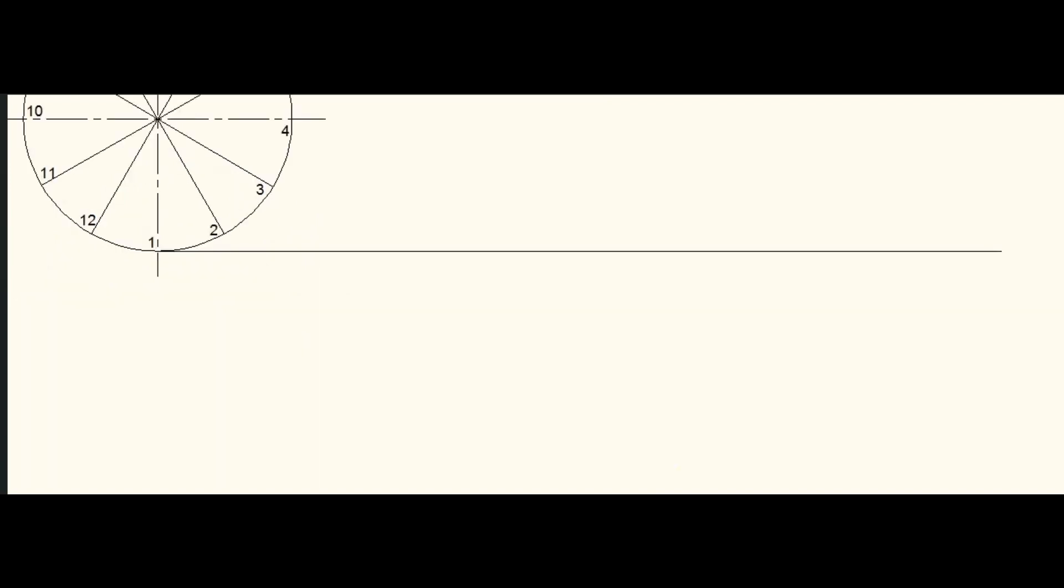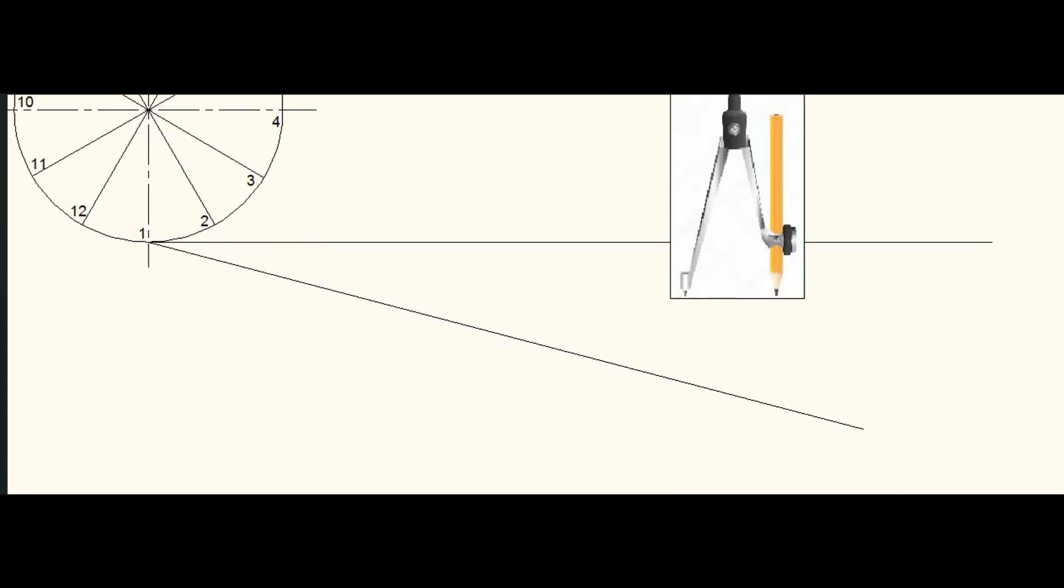Now divide this line also into the same number of parts as that of the circle. For dividing a line, another line is drawn from the starting point with any acute angle. Take any convenient distance in the compass and mark points on the line.